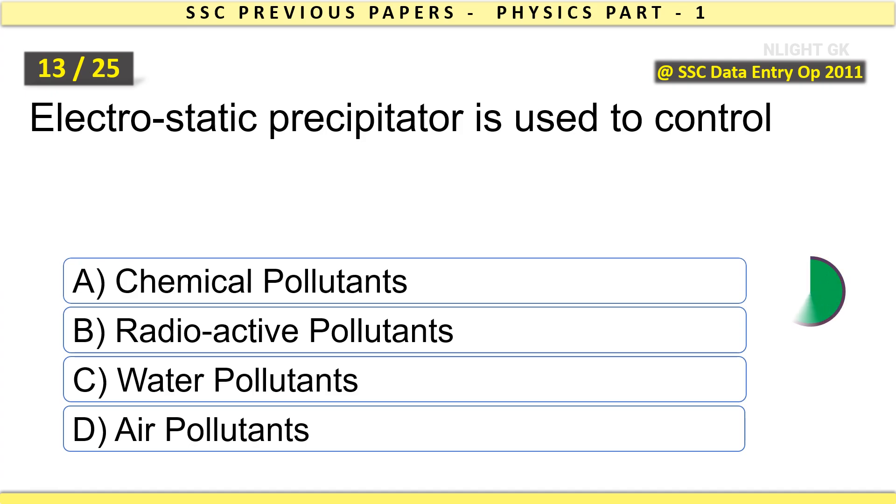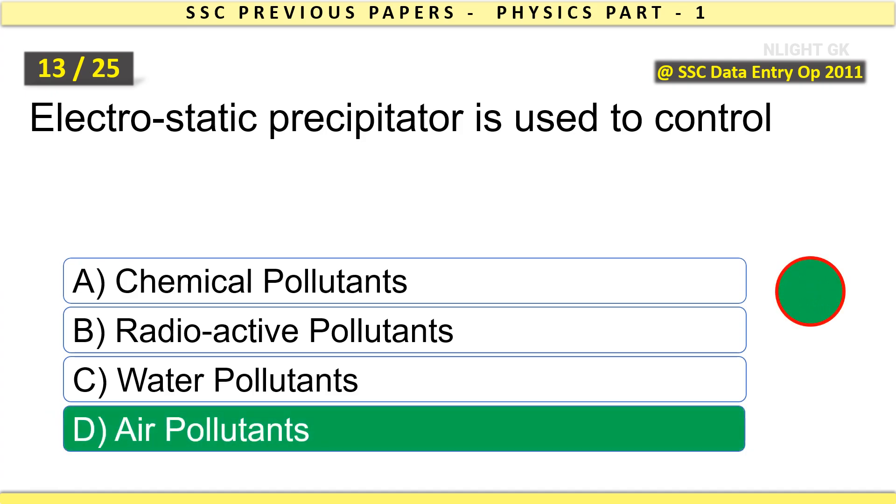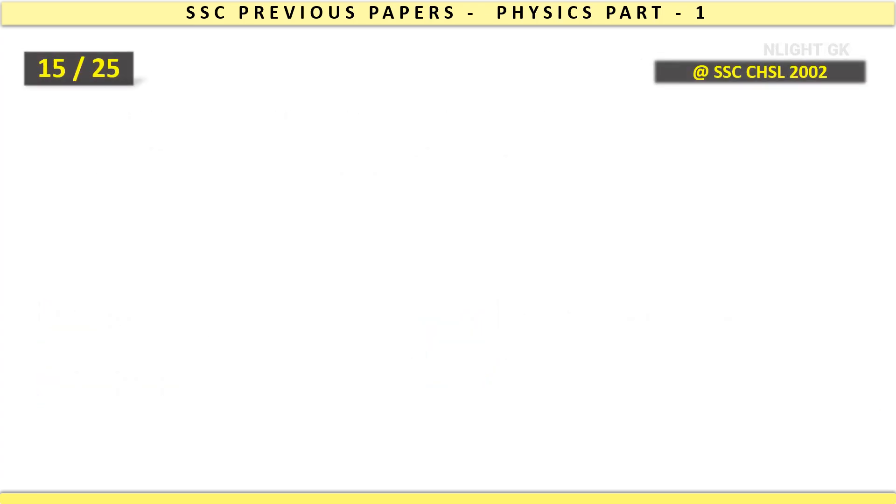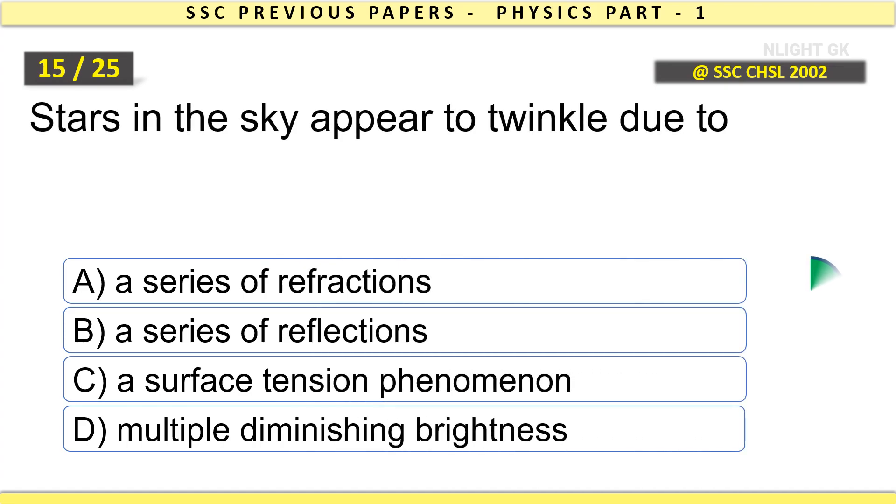Electrostatic precipitator is used to control air pollutants. The type of mirror used in automobiles to see the traffic on the rear side is convex. Stars in the sky appear to twinkle due to a series of refractions.